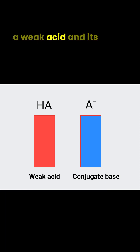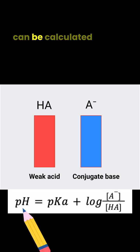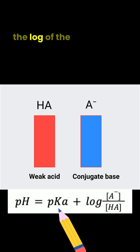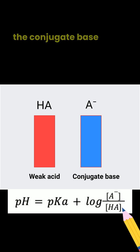A buffer contains a weak acid and its conjugate base, or a weak base and its conjugate acid. When both are present in solution, the pH can be calculated using this equation: pH equals pKa plus the log of the concentration of the conjugate base over the concentration of the weak acid.